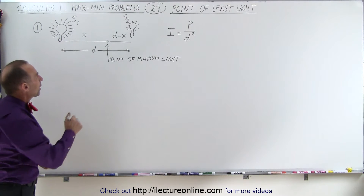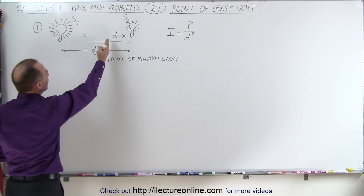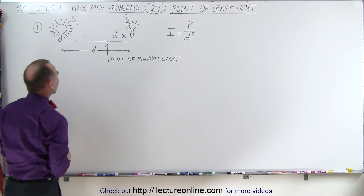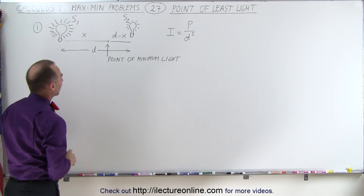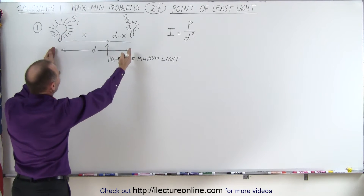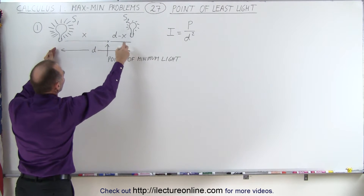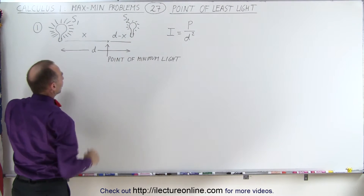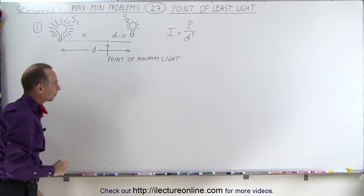So where would the point be? Let's call that distance x away from the source on the left. And of course, if this is d between the two, then d minus x is the distance from the other source.